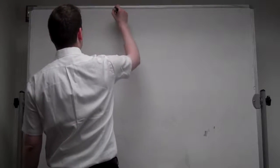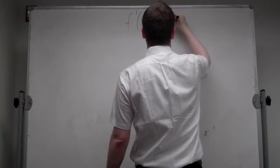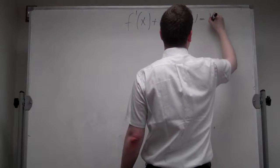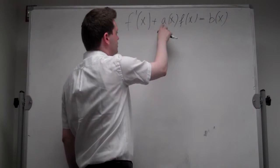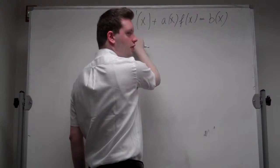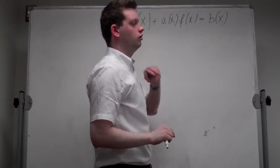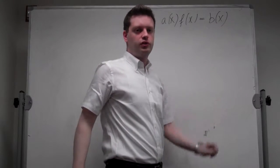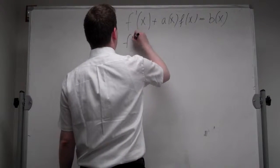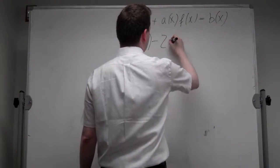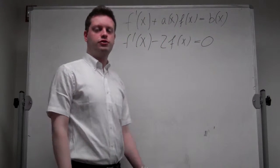So let's start with the general form. A general first-order differential equation has the form f prime plus a·f equals b. The derivative of some function, plus some function of x times that function, equals some other function of x. This system is called homogeneous if b is 0. So let's make a simple example: f prime of x minus 2·f of x equals 0. We start with the homogeneous first-order linear differential equation.